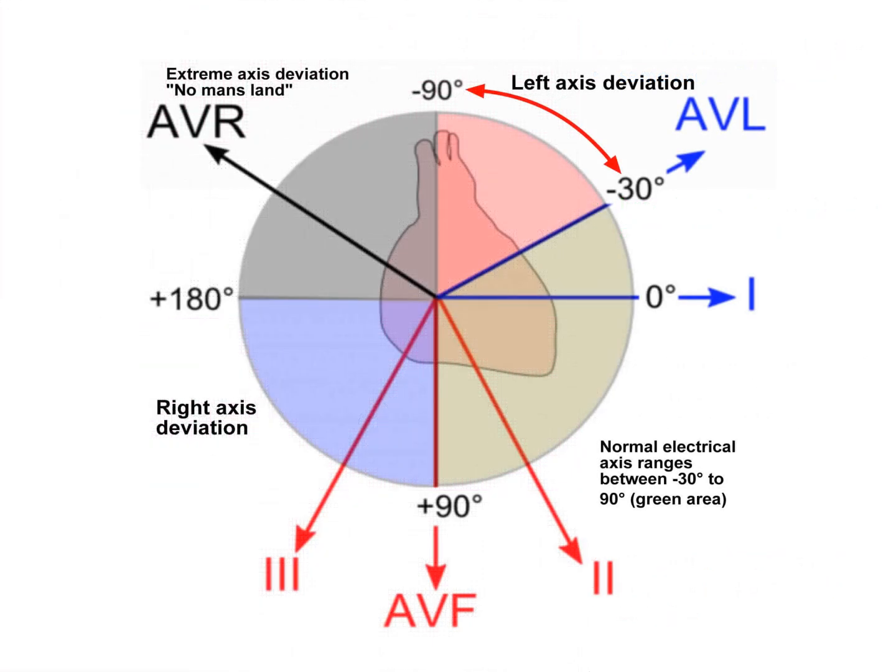The electrical axis of the heart is the net direction in which the waves of depolarization travel. Normally, this begins at the sinoatrial node, from where the wave of depolarization travels down to the apex of the heart. The axis indicates the direction of the mean vector and can be determined from any waveform — P, QRS, or T waves. The standard ECG-reported QRS axis usually refers to the mean axis of the frontal plane, indicating the mean direction of ventricular depolarization forces.